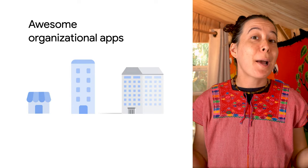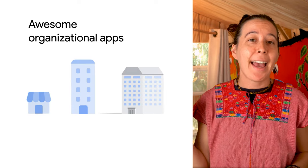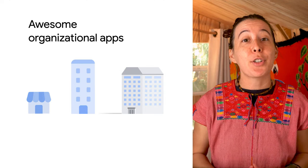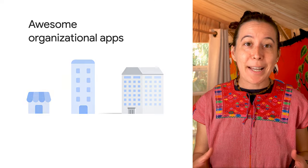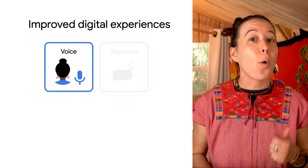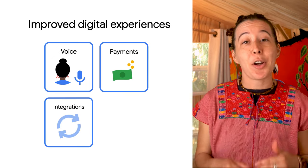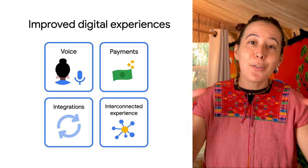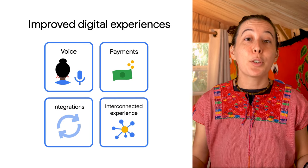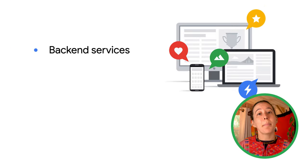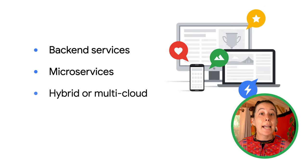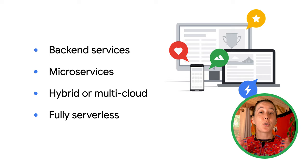Let's say you or your company built an application a while back and now you would like to bring it up to snuff and offer features that modern apps have today. For example, you may want to enable voice ordering or mobile payments, or you may want to make it easy for other developers to integrate into your app, or maybe you would like to create a unified experience across different lines of business and multiple backend services. In this episode, I will cover how Google's API management tool called Apigee helps organizations create digital experiences for both older backend services, microservices, hybrid or multi-cloud environments, and fully serverless stacks.